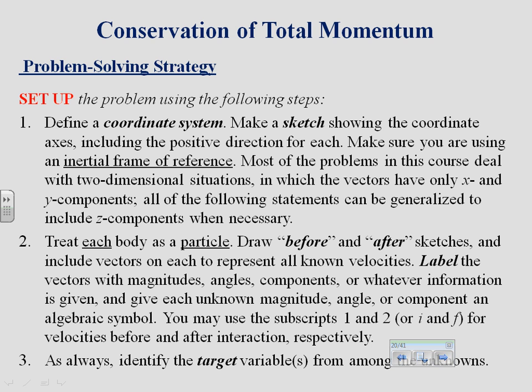This is extremely important because the most common mistake people make is forgetting that if one velocity is to the right and one is to the left, one of those velocities must be negative. Label your vectors with magnitudes and angles if you have something in two dimensions. Draw your x and y components or whatever information is given. Give each unknown magnitude, angle, or component a symbol — you might use subscripts one and two, or initial and final, for the velocities before and after the collision.